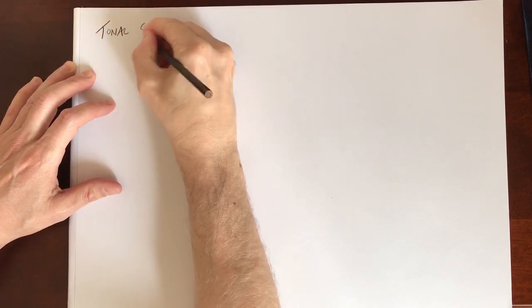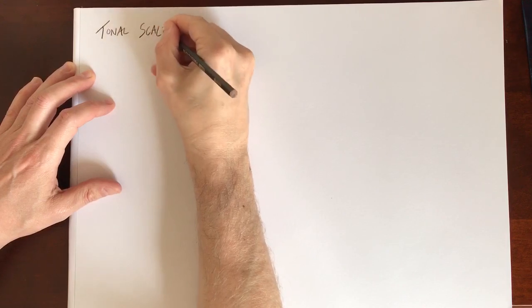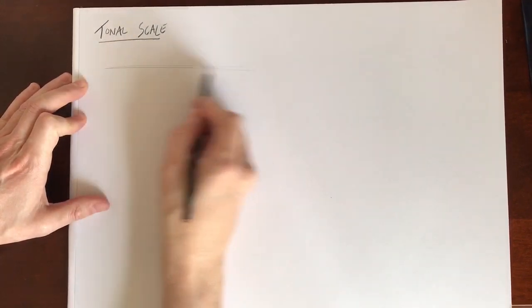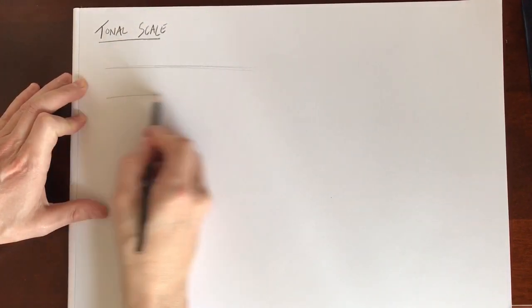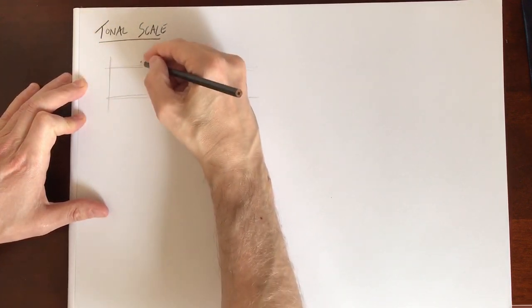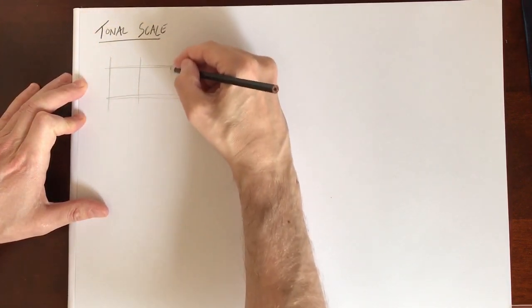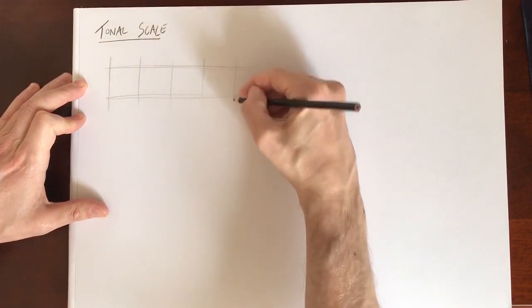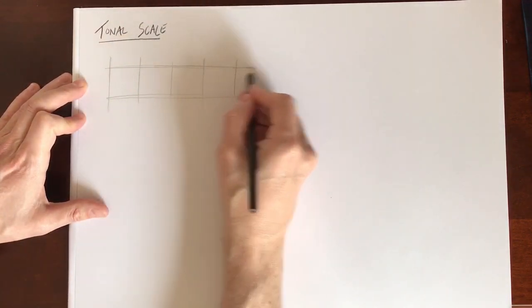Before we can render any forms, the first task you need to do is to practice how to apply tone by producing a tonal scale. On the screen you can see I've begun to sketch a flat tonal scale. A flat tonal scale consists of five squares which you need to sketch in your jotter.